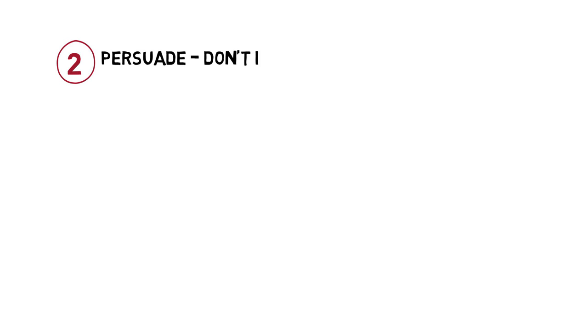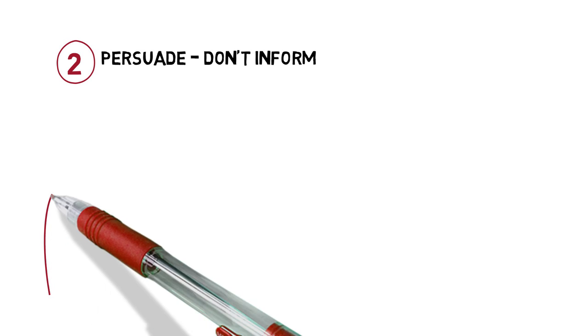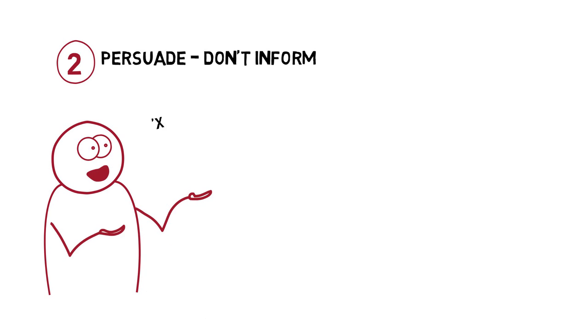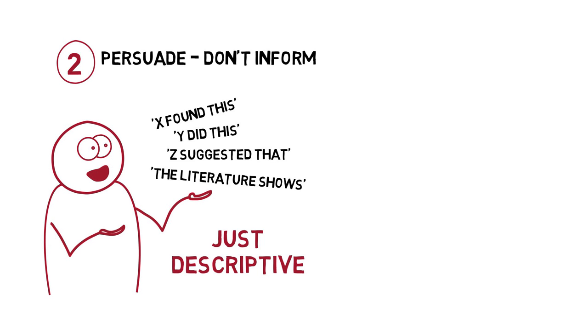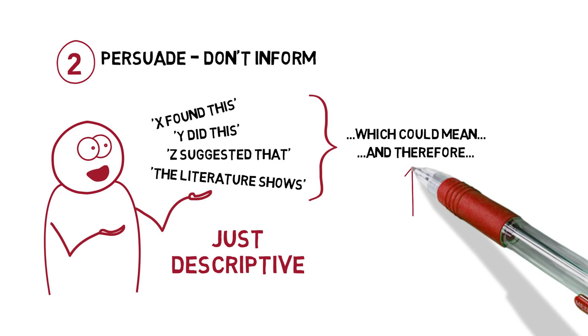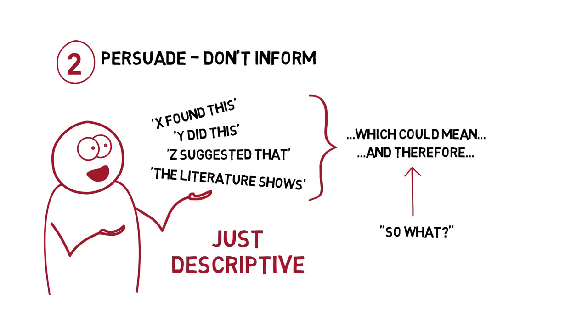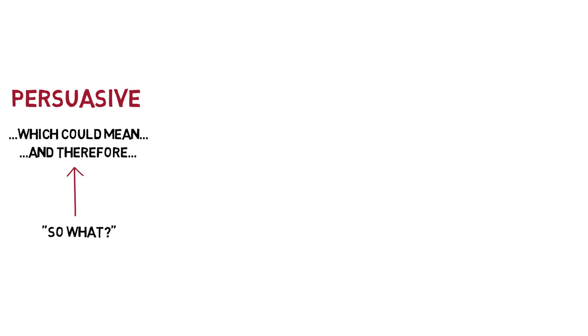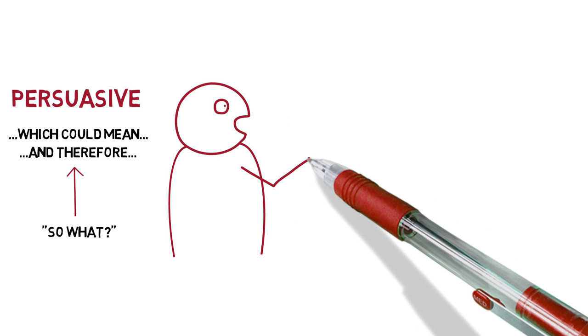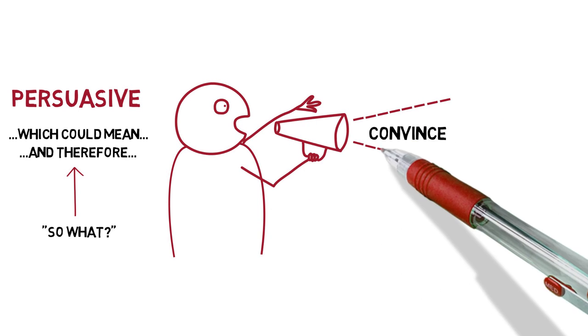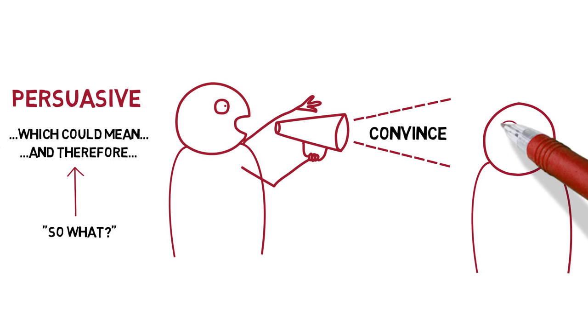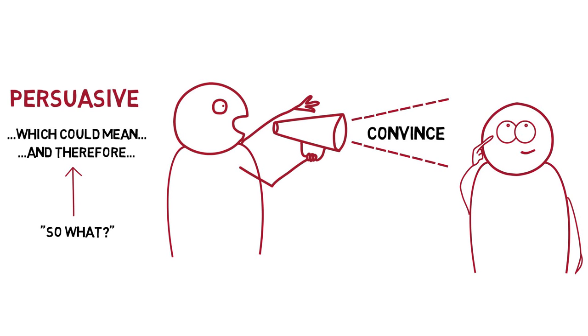The next rule of critical writing is to make sure you persuade rather than inform. Don't just describe what you have read in the literature and expect the reader to make up their own mind. That would be too descriptive. You need to explain to the reader what the evidence means, answering the so what question and therefore making your argument persuasive. You need to convince your reader that your position is the most credible one to hold. Without that attempt to persuade, you are not making an argument. You are just stating information.